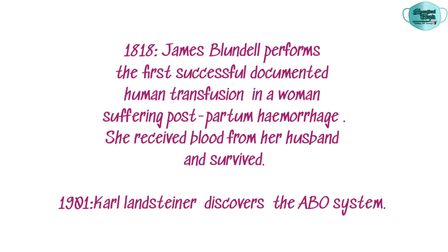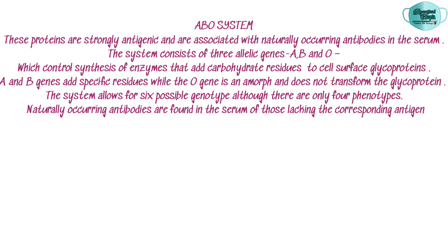The ABO system consists of three allelic genes — A, B, and O — which control the synthesis of enzymes that add carbohydrate residues to cell surface glycoproteins. The A and B genes add specific residues, while the O gene is an amorph and does not transform the glycoprotein. The system allows for six possible genotypes, although there are only four phenotypes.